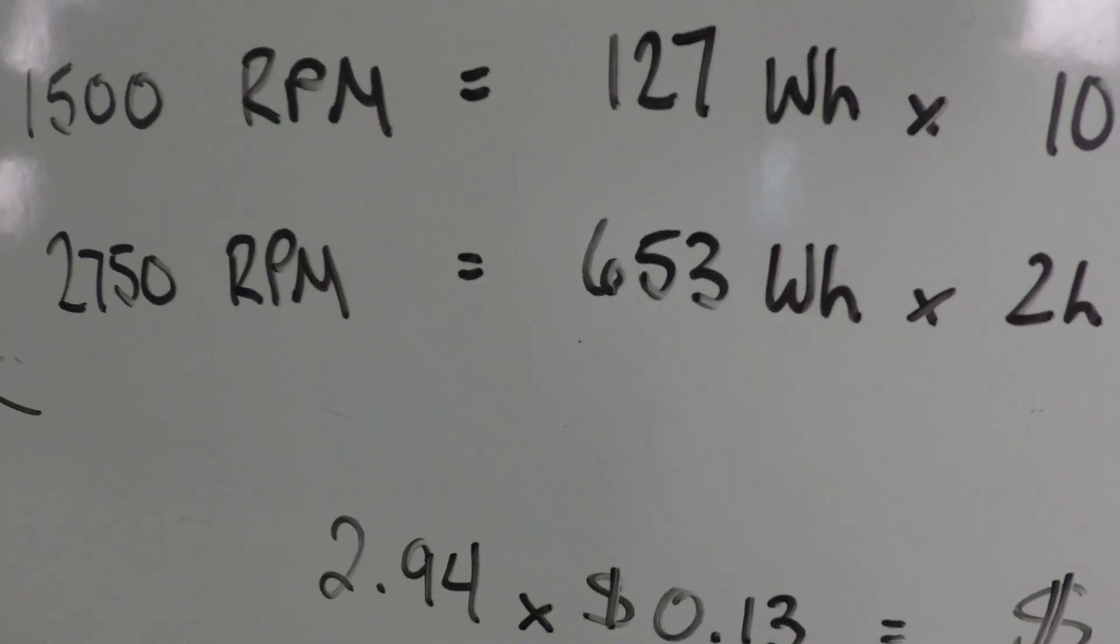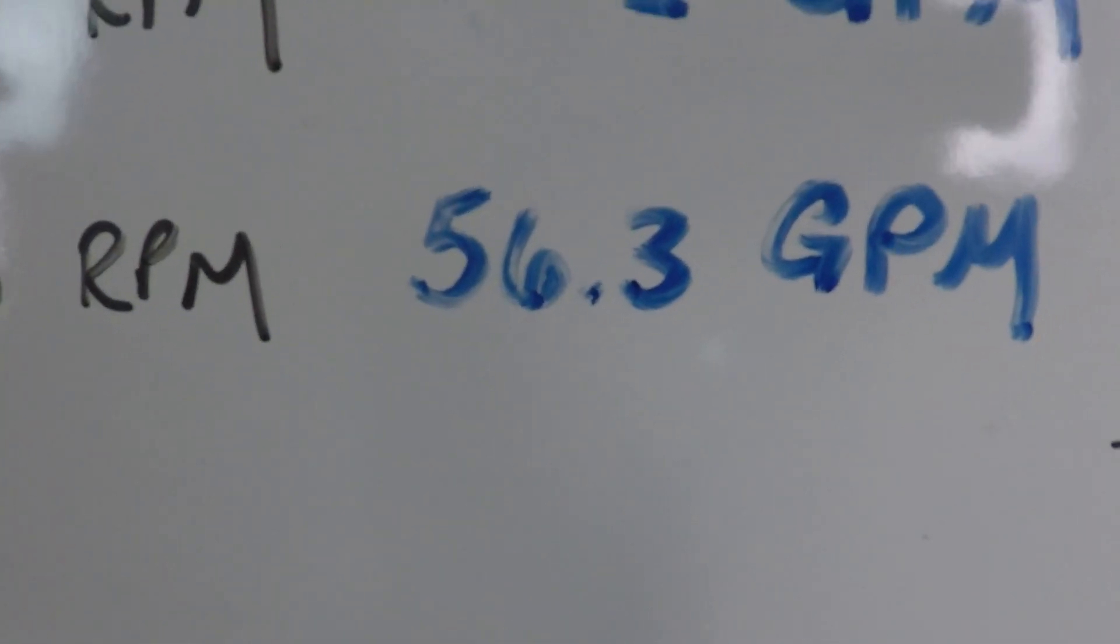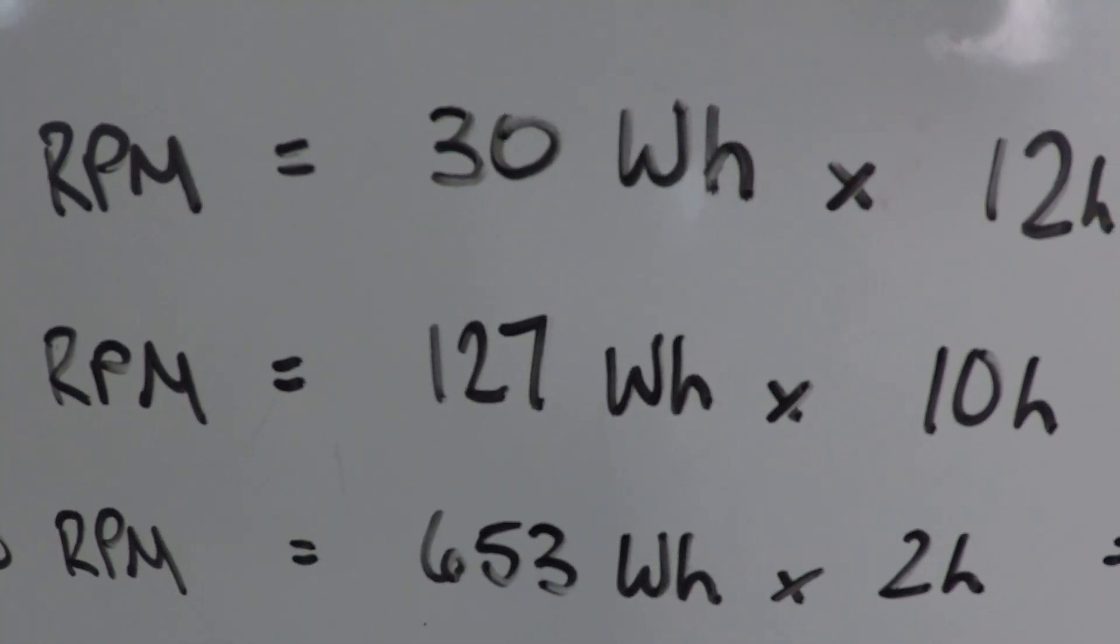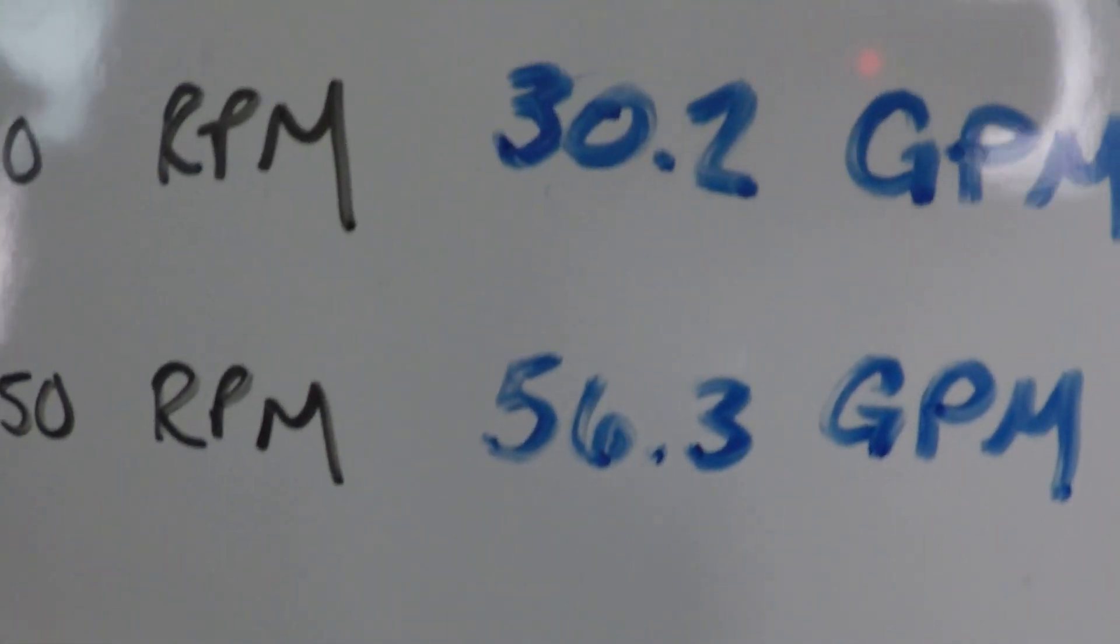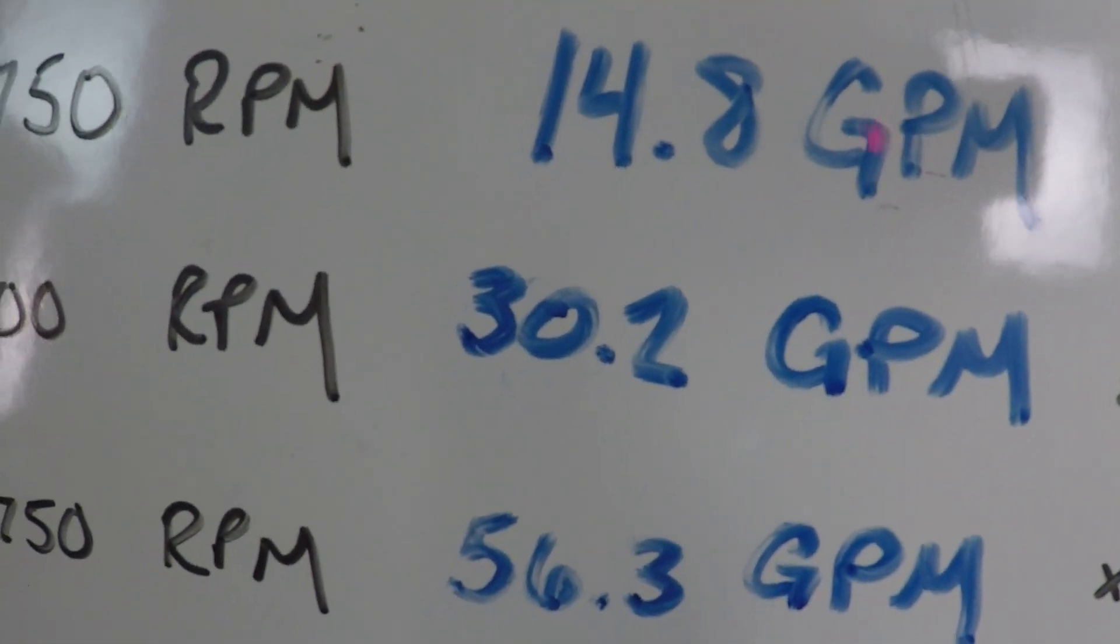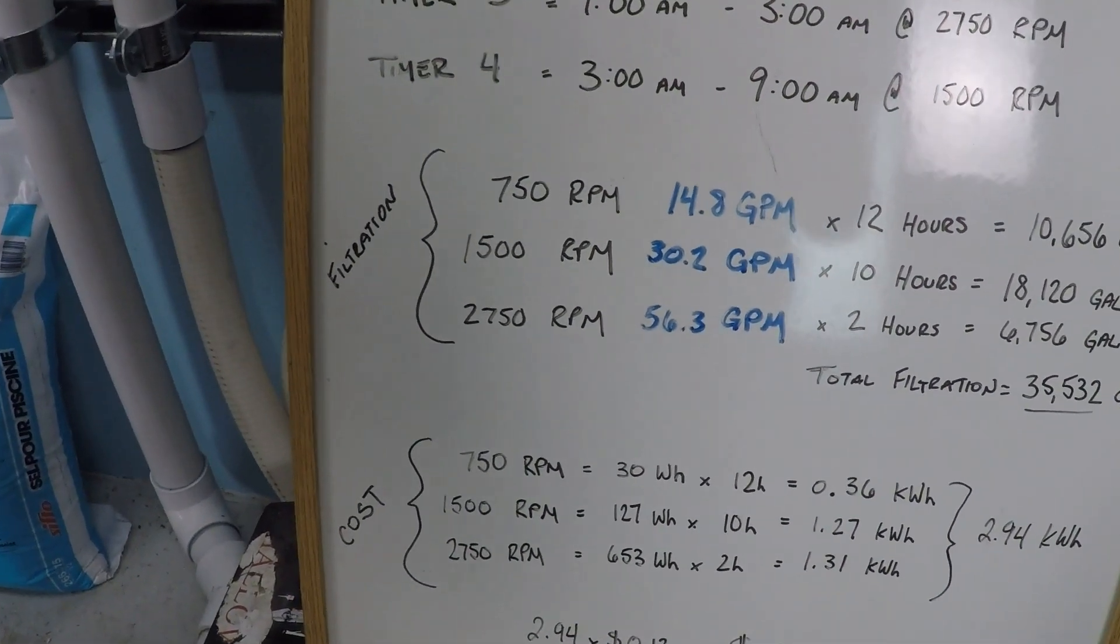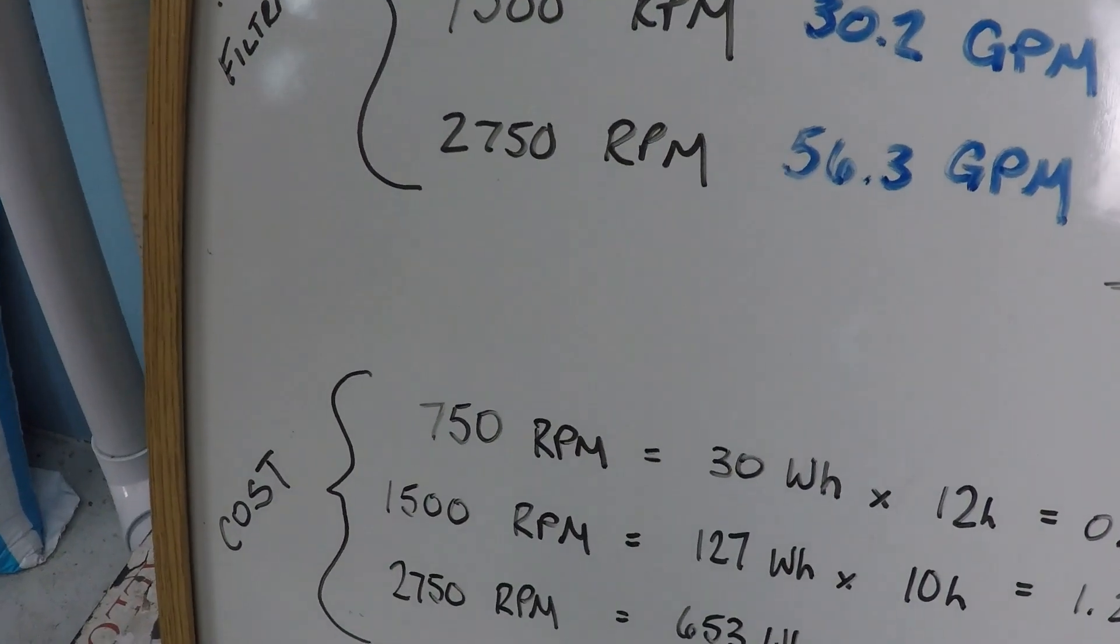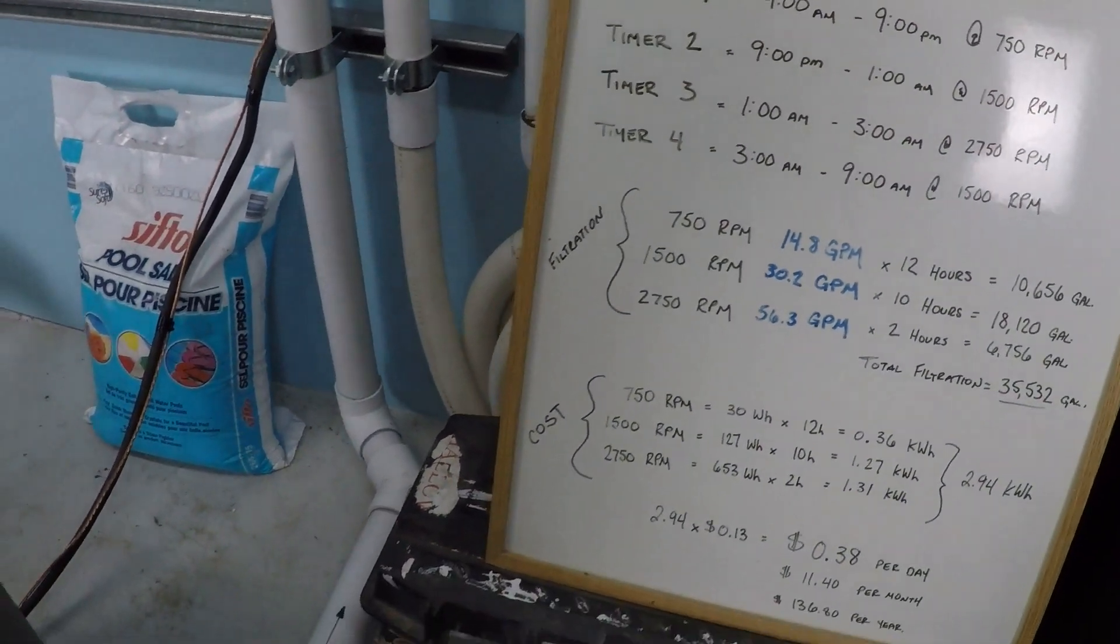And that's very interesting, because at 653 watts per hour, we got 56 gallons per minute. But you cut that wattage way down to 127 watts per hour, we're still getting a shade over 30 gallons per minute. That's how this works. The more you turn it down, the more you save. There's a point of diminishing returns, because you need the pump to be able to overcome the resistance to flow. And you can determine that if you have a flow meter.